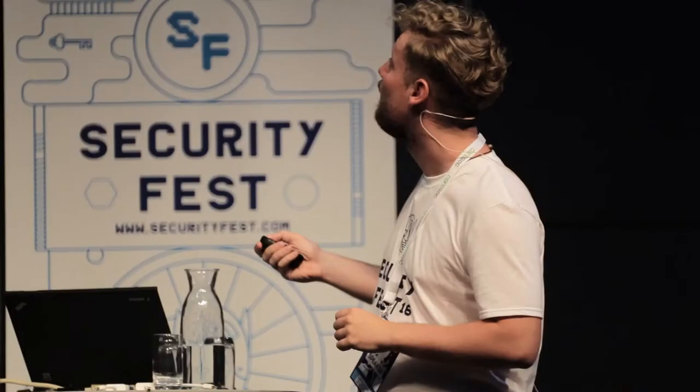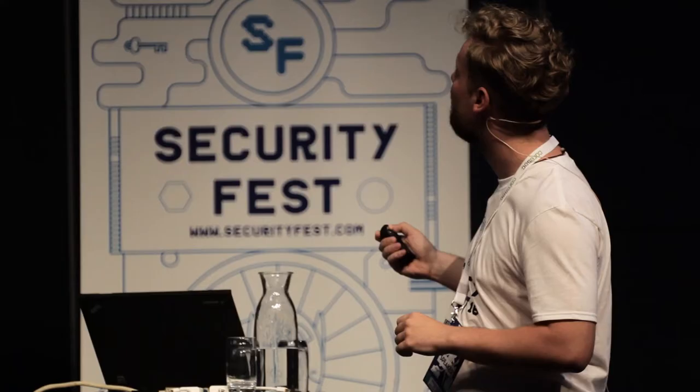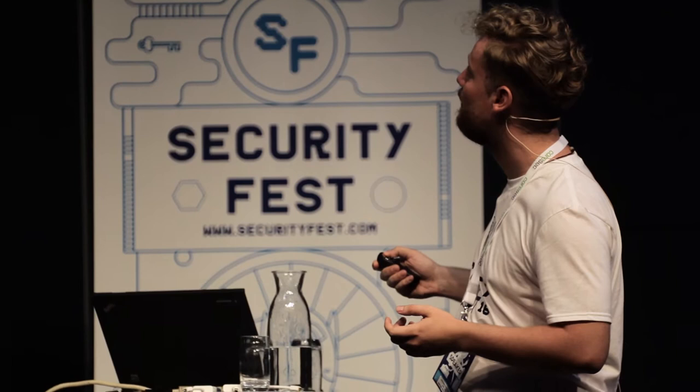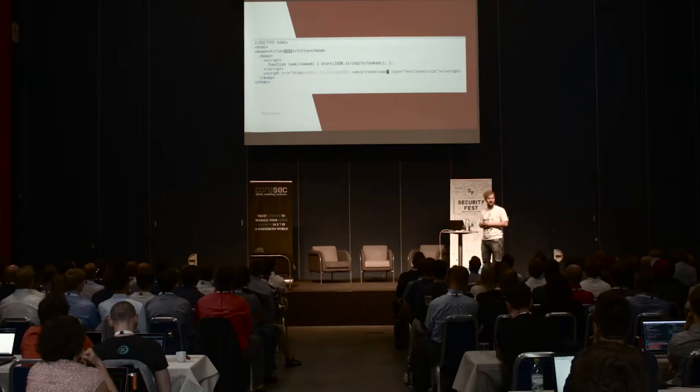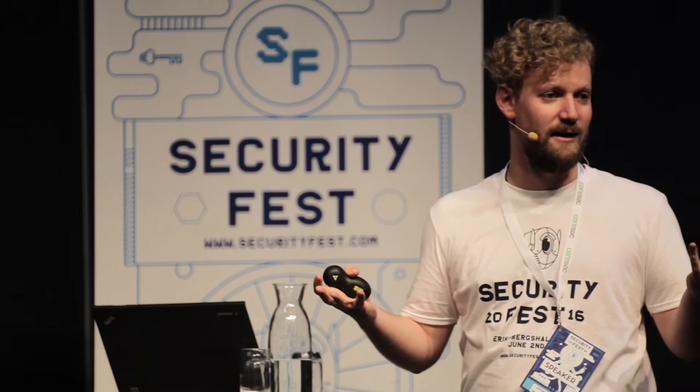This is as complicated as the attack gets. We have a script, we include the resource, we give it our own JSONP callback — a function we define ourselves, it's just JavaScript. The function we define receives the data and simply alerts the stringified version. The data was JSON. So this is how easy it is — it feels a little bit like it's too easy, but this is how complicated it actually is.